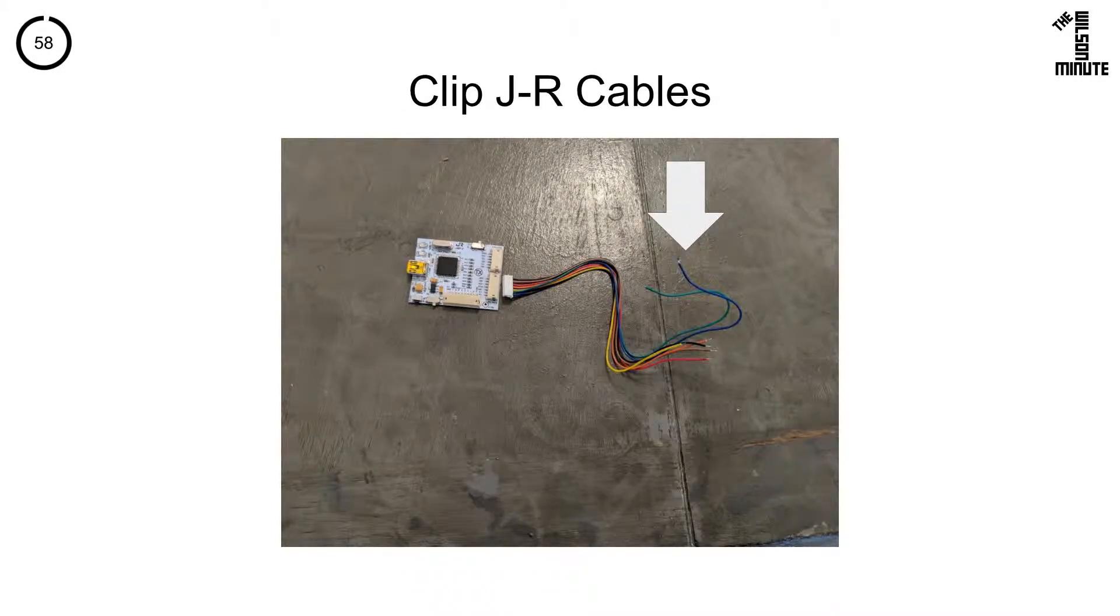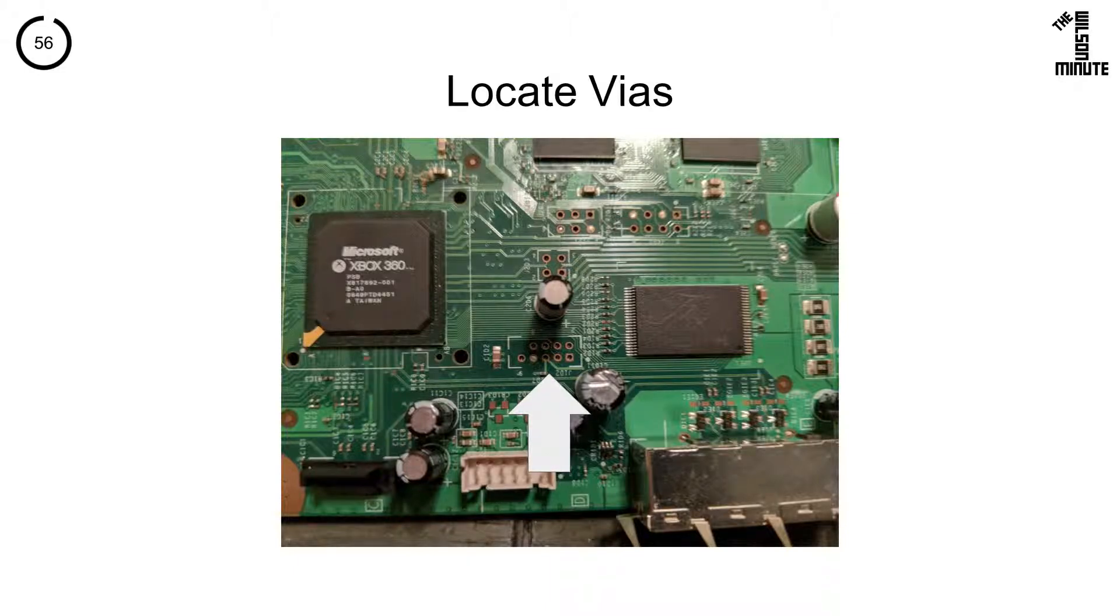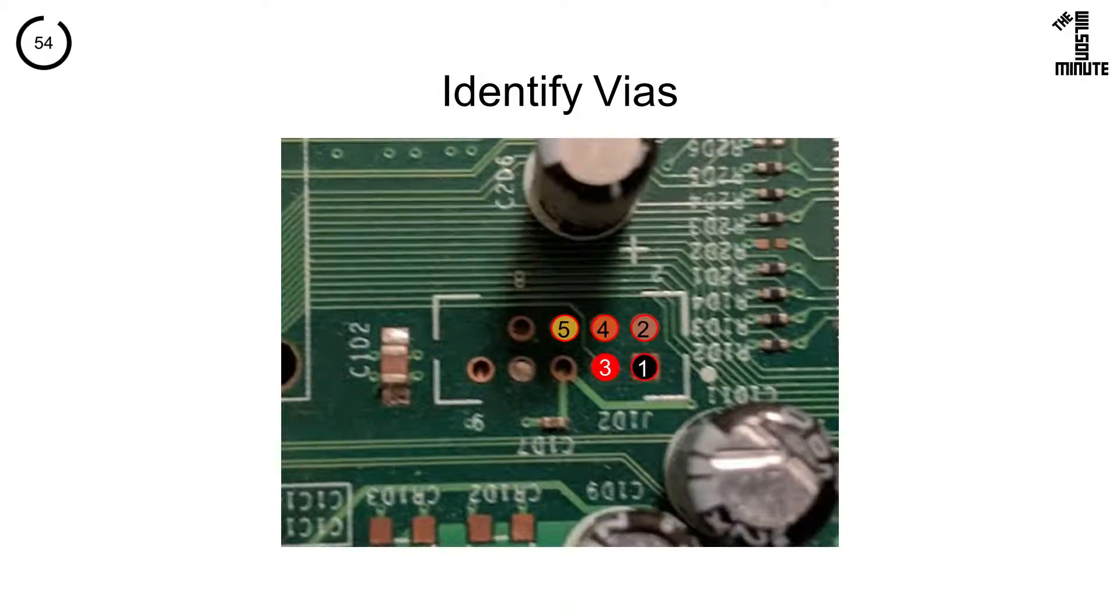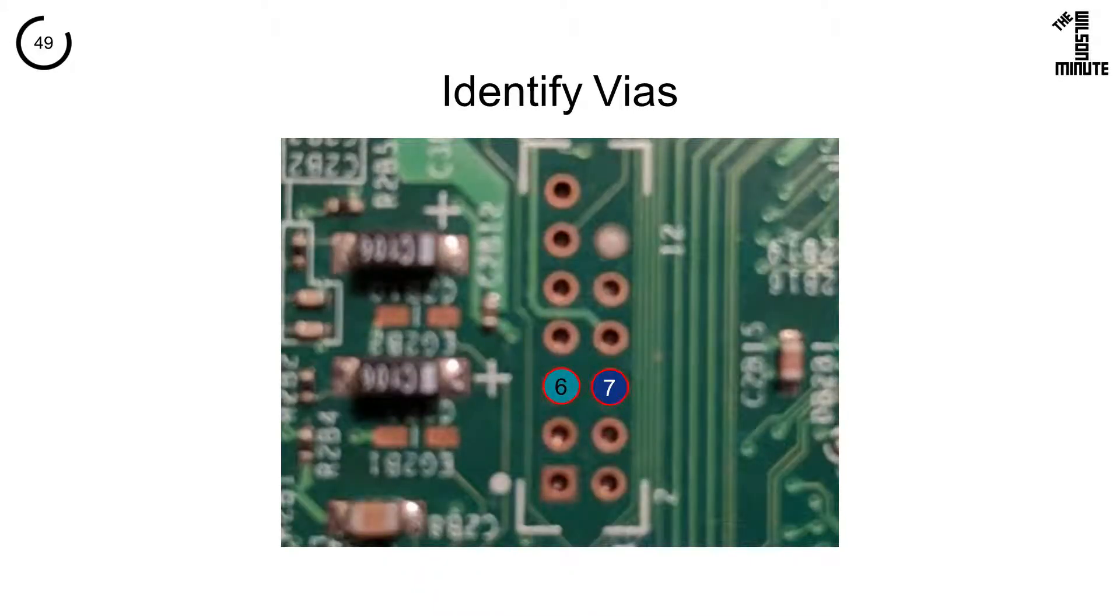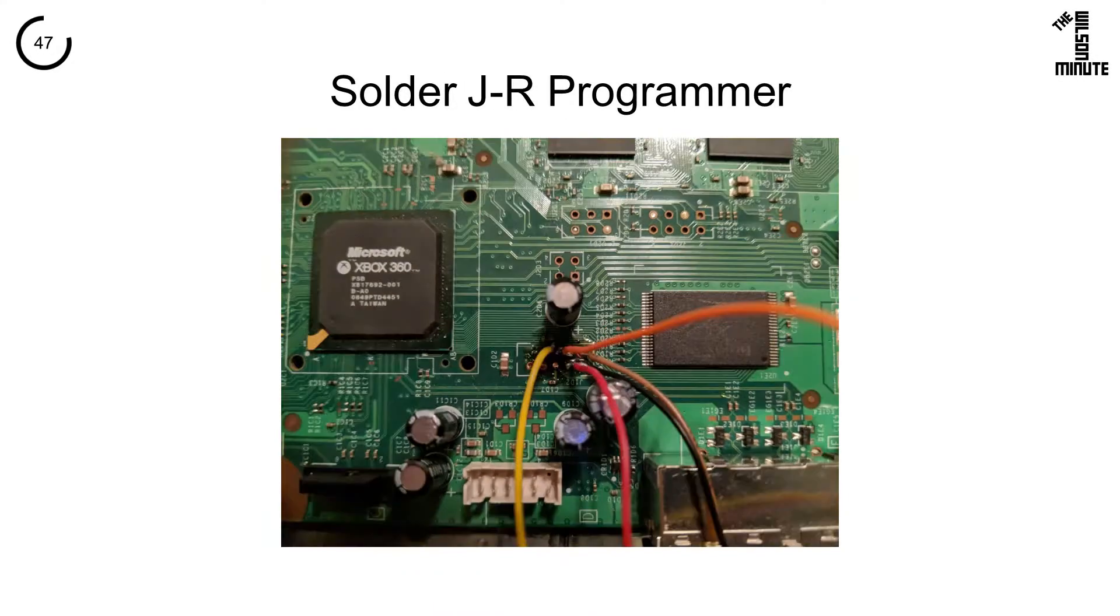Locate this JR cable and strip this end. Locate the vias next to this chip. We will be soldering five of the wires from the JR cable to the same colored vias. Locate the vias on the opposite side of this chip. We will be soldering the last two wires here. Solder the wires.